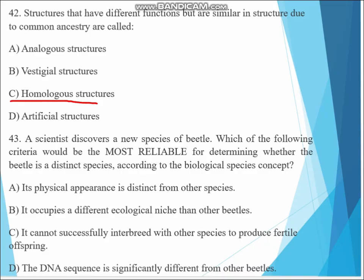Question 43. A scientist discovers a new species of beetles. Which of the following criteria would be the most reliable for determining whether the beetle is a distinct species according to the biological species concept? A. Its physical appearance is distinct from other species. B. It occupies a different ecological niche than the other beetles. C. It cannot successfully interbreed with other species to produce fertile offspring. D. The DNA sequence is significantly different from the other beetles. The answer must be C, because biological species concept is reproductive isolation.